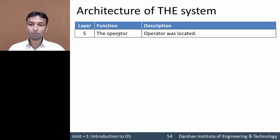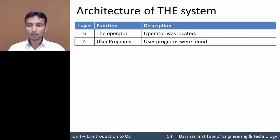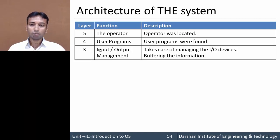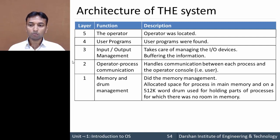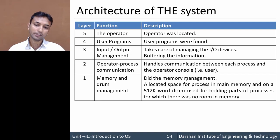The THE system is divided into different layers. Layer 5 is the operator level, where the operator is located. Below it is layer 4, user programs. Below that is layer 3, input/output management, which handles input and output devices as well as buffering information temporarily. Below it is layer 2, operator-process communication, which handles communication between each process and the operator console. Layer 1 is memory and drum management.